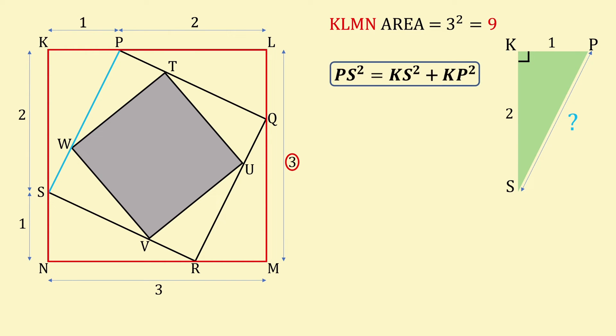PS squared is equal to KS squared plus KP squared. Substituting in the values, PS squared is equal to 2 squared plus 1 squared, which is 5.